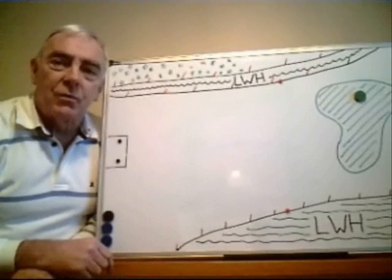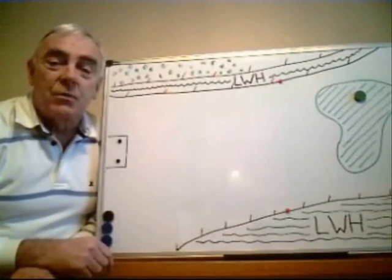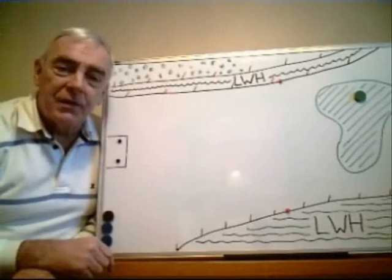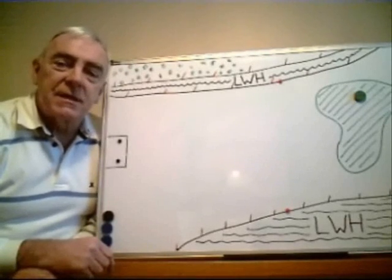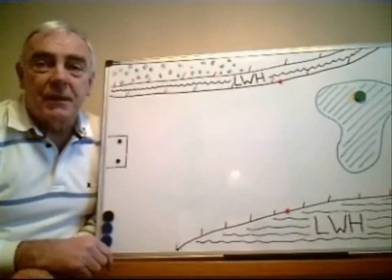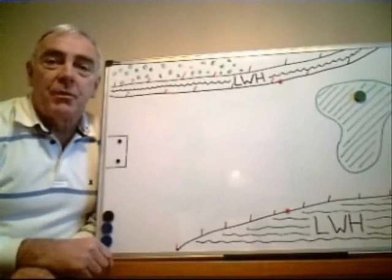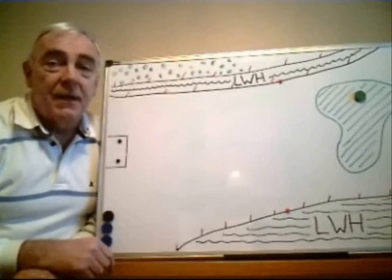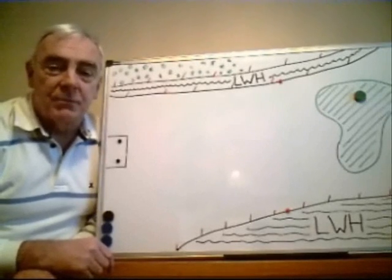But what is a lateral water hazard? It's a water hazard or that part of a water hazard so situated that it isn't possible, or the committee deems that it would be impracticable, to drop a ball behind the water hazard in accordance with Rule 26.1b.